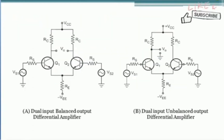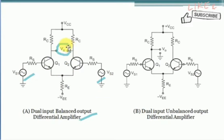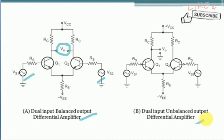Now let us see a glance at each configuration. The first configuration is dual input, balanced output differential amplifier circuit. Dual input means the two inputs are applied to the basic differential amplifier, and the output is taken across the potential difference of the two collector terminal outputs.